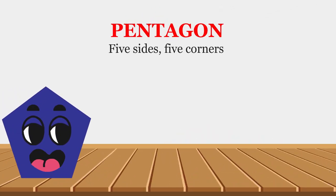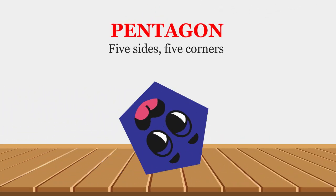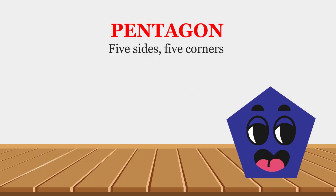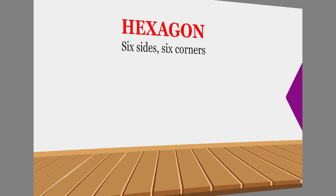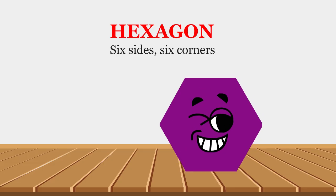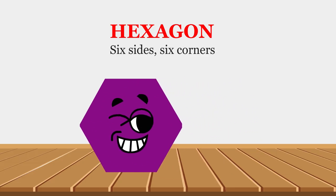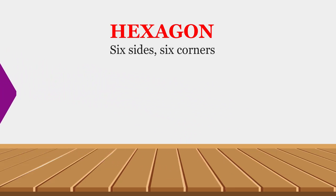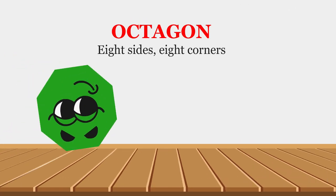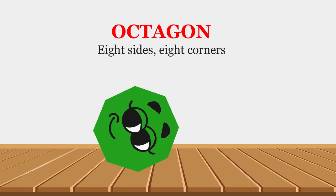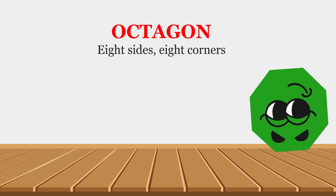Pentagon: five sides, five corners. Hexagon: six sides, six corners. Octagon: eight sides, eight corners.